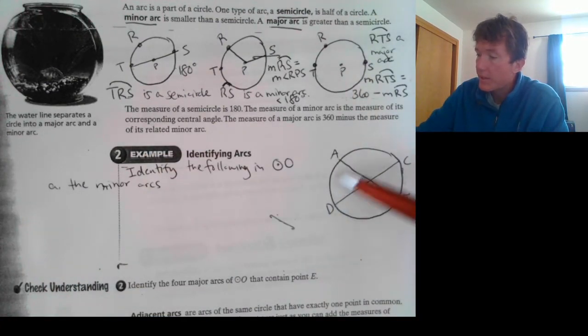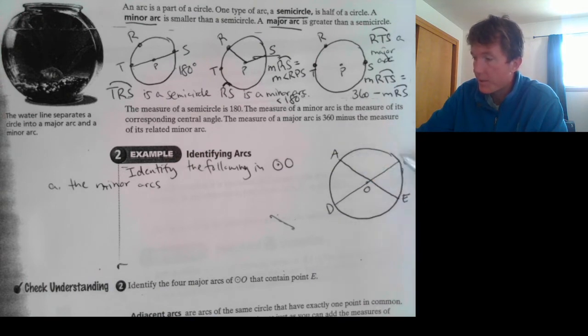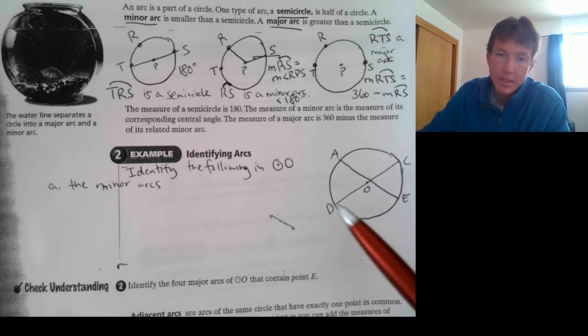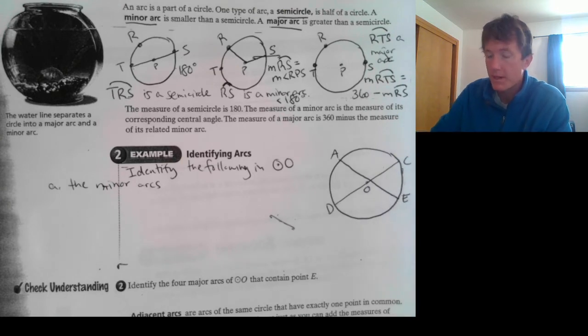So, let's look at our minor arcs. We have AD is less than a semicircle. AC is less than a semicircle. CE is less than half the circle. And DE is less than half the circle. DC would be an example of half the circle. So, that's not one of our minor arcs.